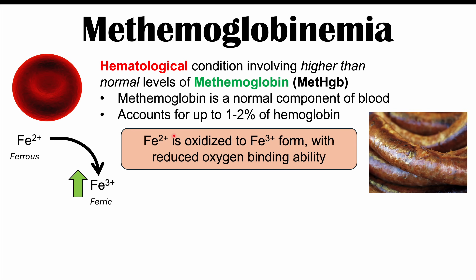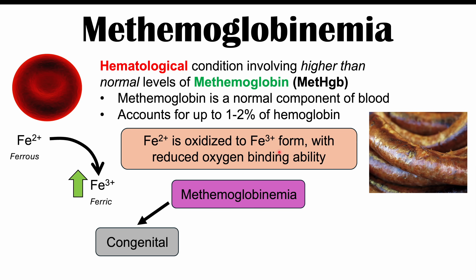Fe2+, or ferrous ion, will be referred to as the reduced iron form, and Fe3+, or ferric ion, as the oxidized iron form — these terms will be used interchangeably throughout this lesson. Methemoglobinemia can be either congenital — some individuals are born with particular predilections for converting Fe2+ into Fe3+ — or it can be an acquired condition, which is the most common.